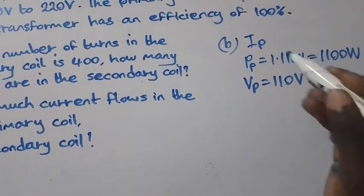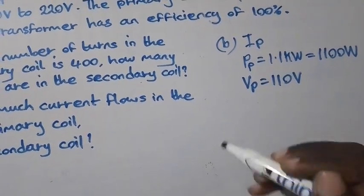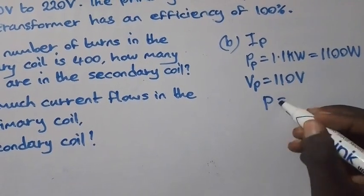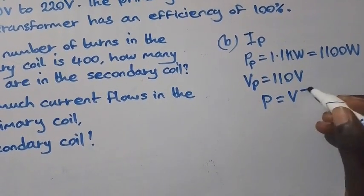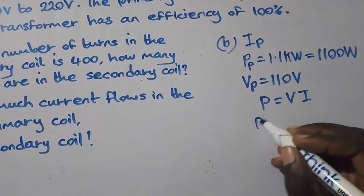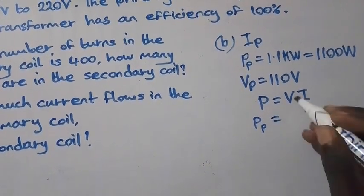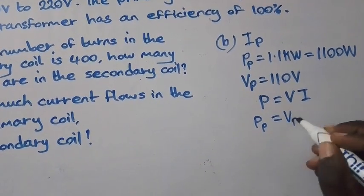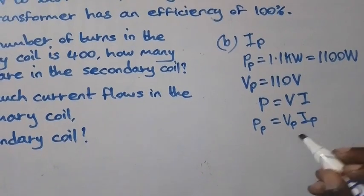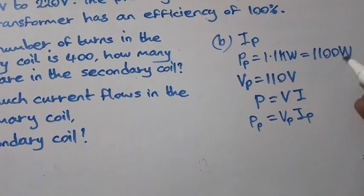So to find IP it will be very easy because we are going to apply this formula: Power equals voltage times current. So we have PP, we have VP, and IP.